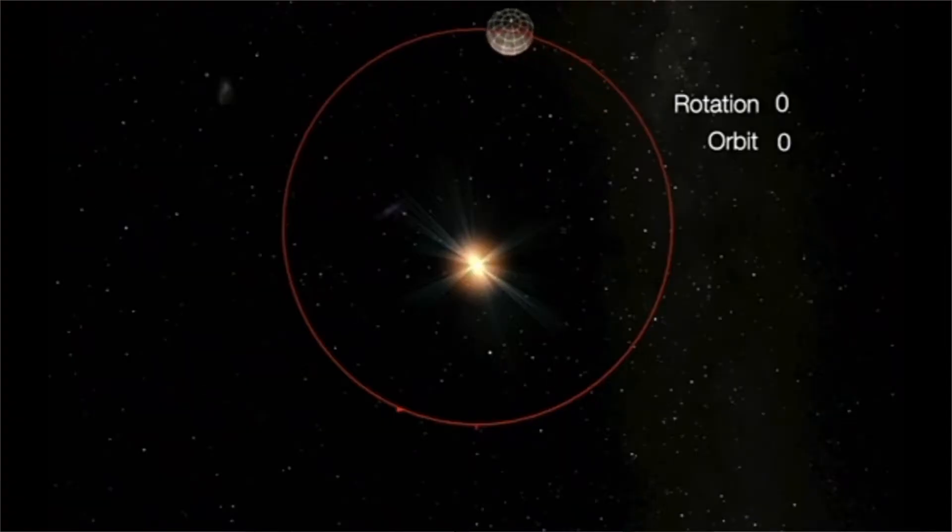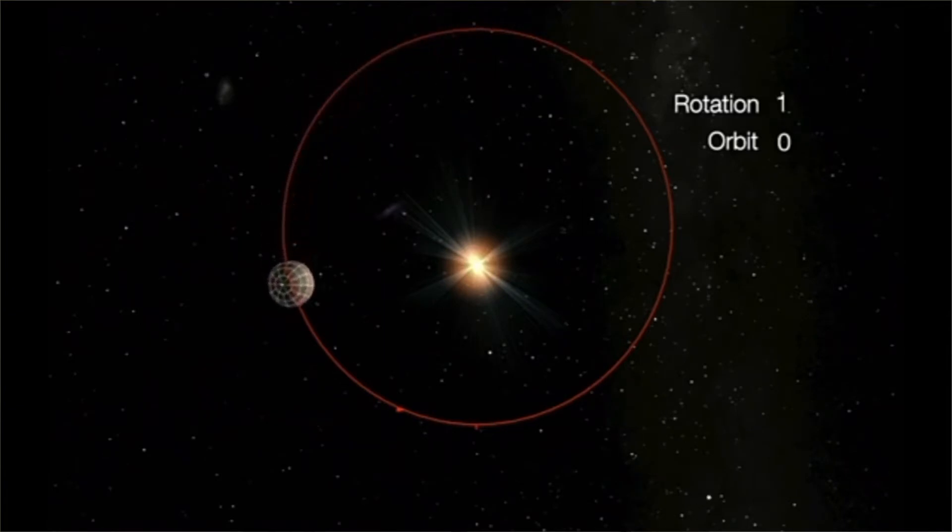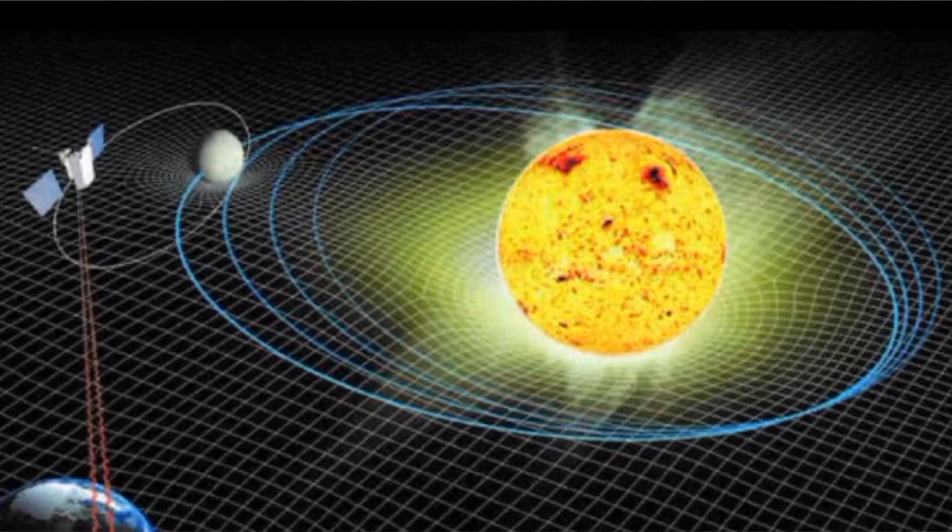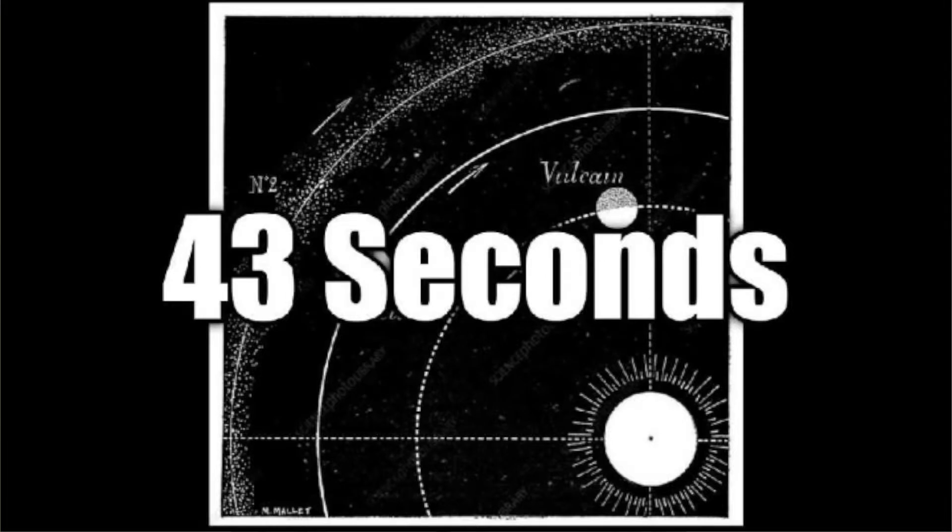In the 19th century, dark matter was blamed for the anomalous advance of Mercury's perihelion. Mercury's elliptical orbit around the sun advances or precesses by a very small amount each orbit. The expected precession, according to Newtonian and Keplerian laws of planetary motion, was inexplicably exceeded by 43 seconds of arc per century.